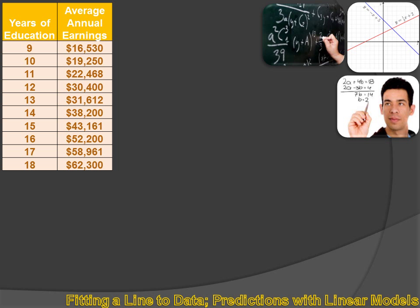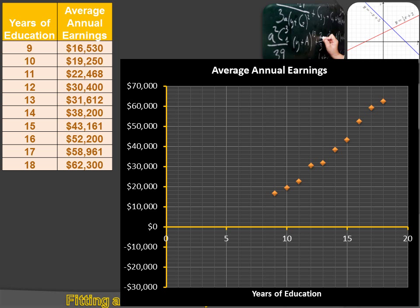Well, now I could graph this relationship between years of education and earnings. I could call years of education my x variable and average annual earnings my y variable. And if I graphed it, it would look just like that. And when I look at that, I can see that pretty clearly there is a relationship between years of education and average annual earnings. As years of education increase, average annual earnings also increase. And it's a pretty tight pattern. It's a pretty predictable relationship.